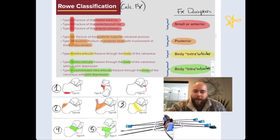So if you can imagine, 2a is not as bad as 2b. So 2a is just the fracture of the posterior superior calcaneal process, but 2b is an avulsion fracture of the posterior beak with involvement of the Achilles tendon. Okay, so that's why I've drawn that there on it.